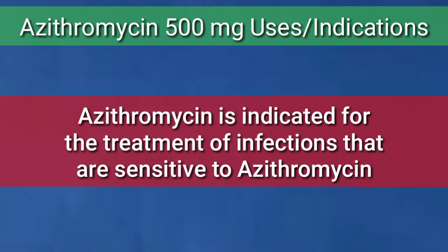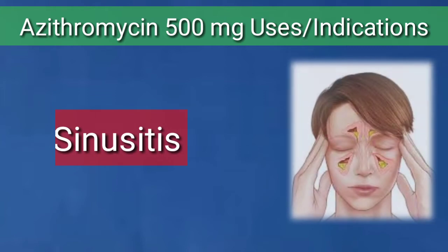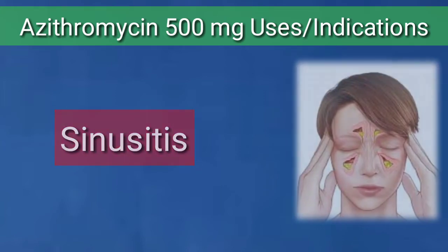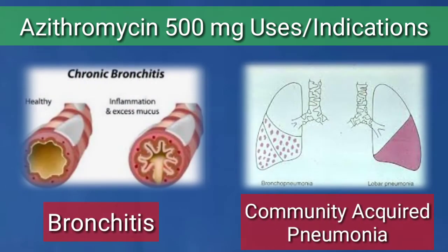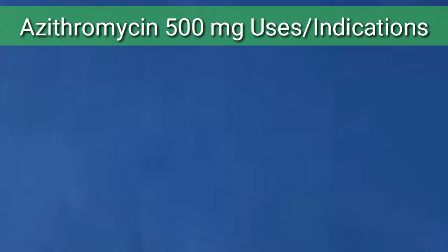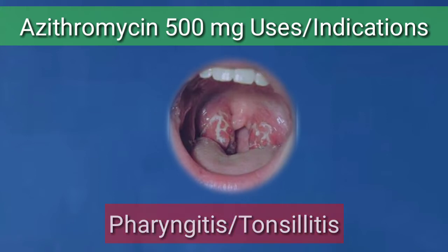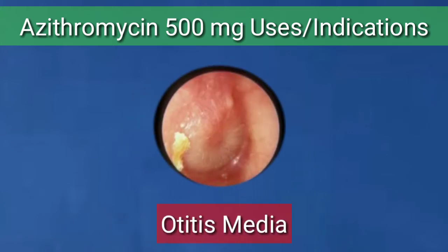Uses and indications: Azithromycin is indicated for the treatment of infections sensitive to azithromycin, for example sinusitis, bronchitis, community-acquired pneumonia or lung infections, pharyngitis or tonsillitis, and ear infections like otitis media.